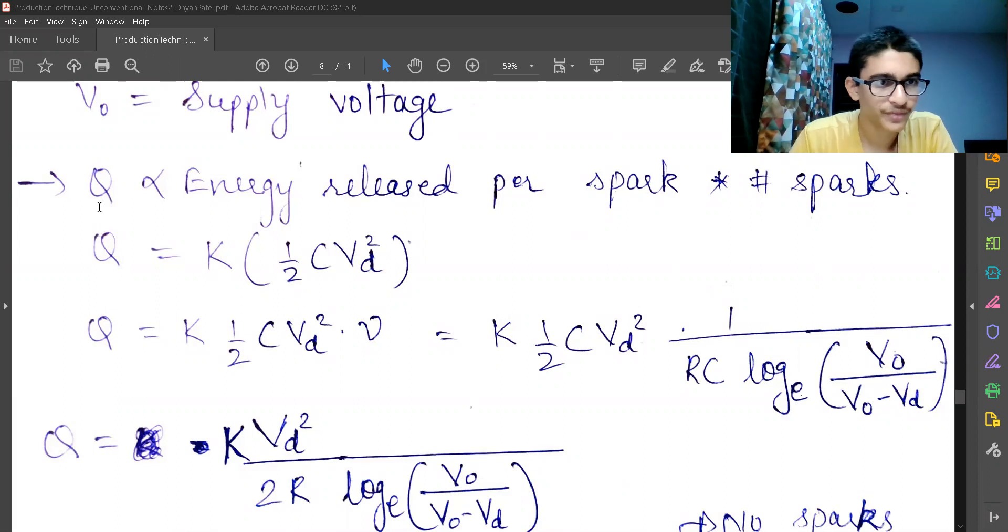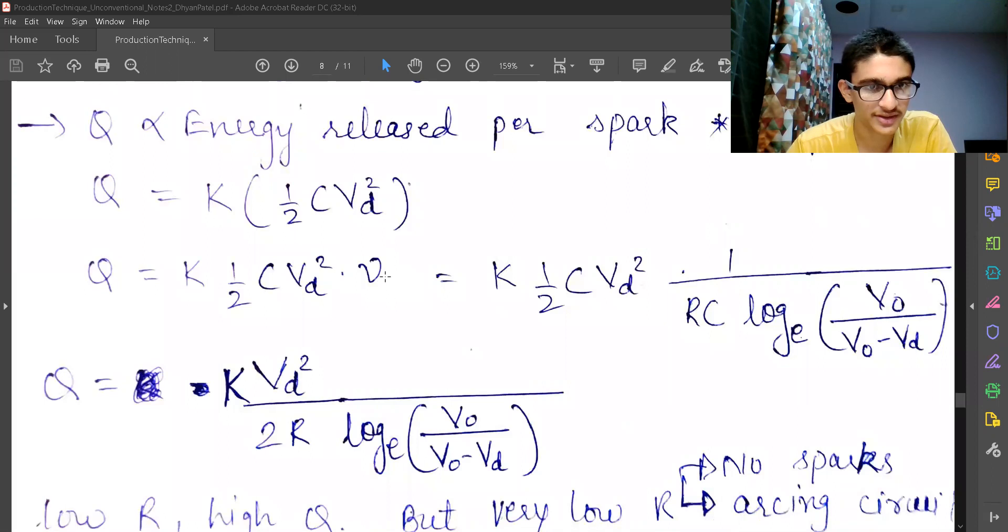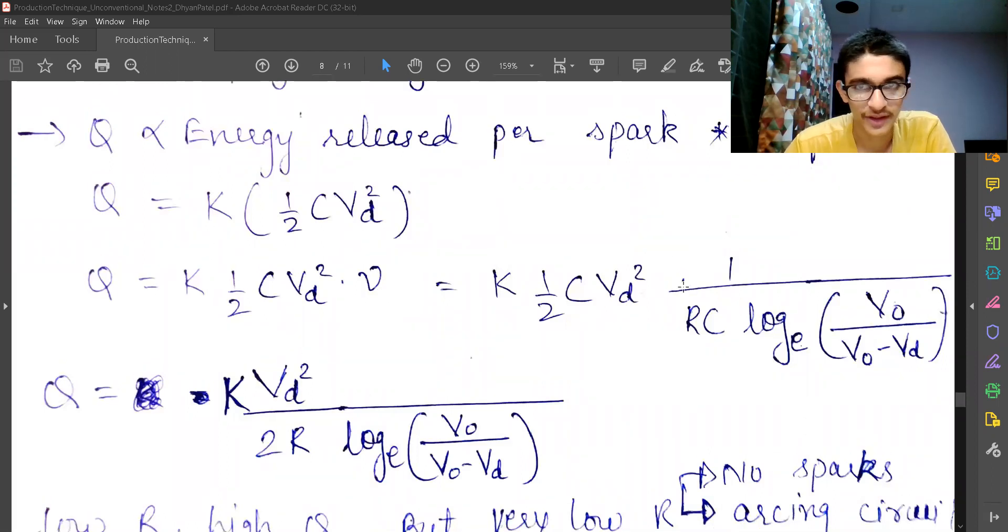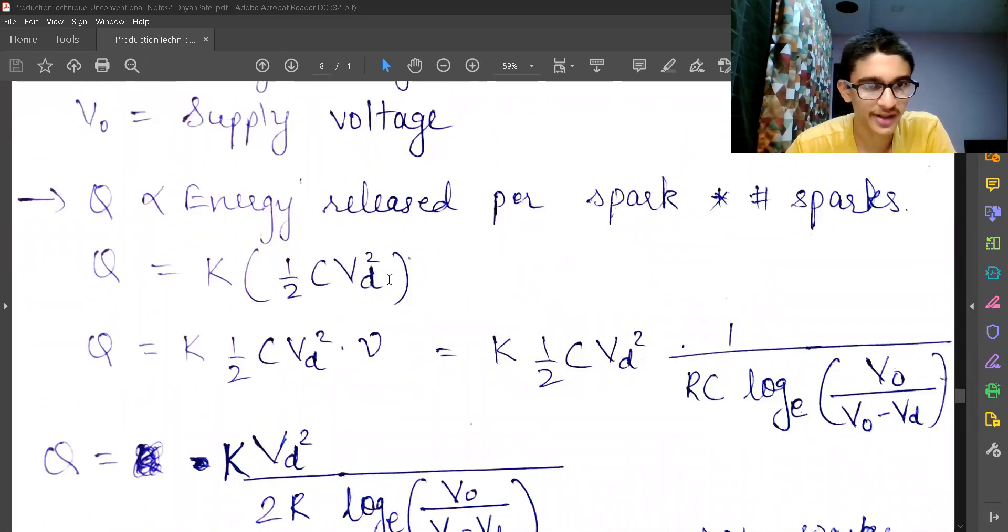So my volume of crater will be directly proportional to energy released per spark into the number of sparks. So my Q, volume of the crater, is equal to some constant K into half CVd square and into the frequency. The frequency is coming from the number of sparks and half CVd square is coming from energy release. K is some proportionality constant.